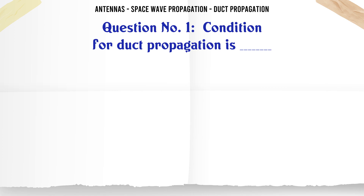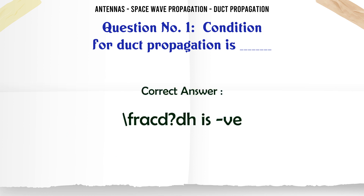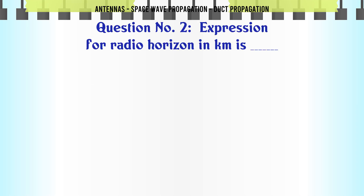Condition for duct propagation is: A) dN/dh is V, B) dN/dh is V, C) dN/dh is 0, D) dN/dh is unity. The correct answer is dN/dh is V.